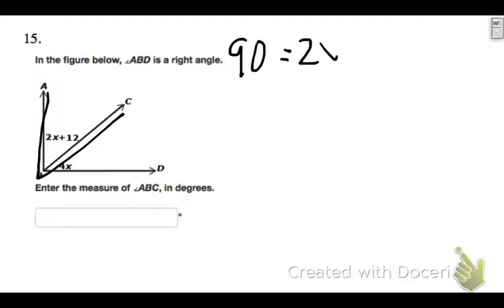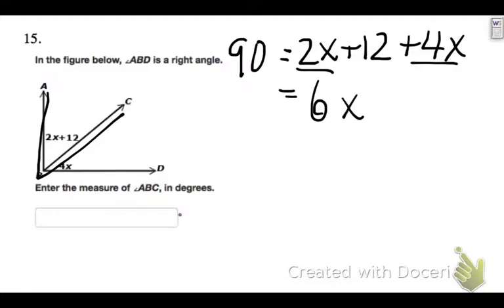90 equals 2x plus 12 plus the other angle, which is 4x. To solve this, I can combine like terms. 2x plus 4x is 6x, plus 12 equals 90.